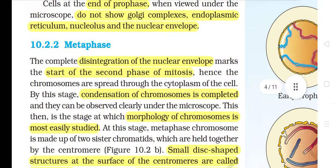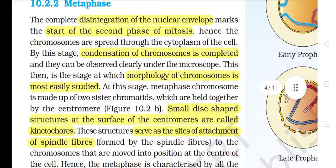10.2.2 Metaphase. The complete disintegration of the nuclear envelope marks the start of the second phase of mitosis. Hence, the chromosomes are spread throughout the cytoplasm of the cell. By this stage, condensation of chromosomes is completed and they can be observed clearly under the microscope. This is the stage at which morphology of chromosomes is most easily studied. At this stage, metaphase chromosomes are made up of two sister chromatids which are held together by the centromere.